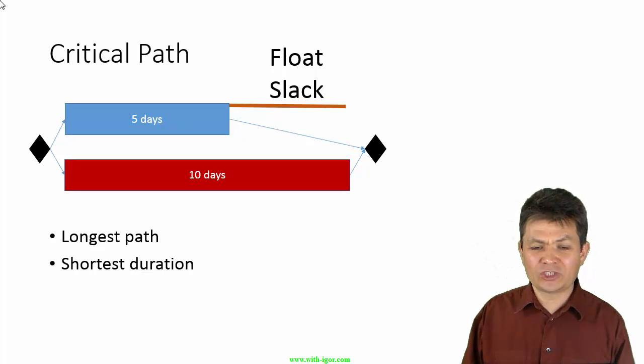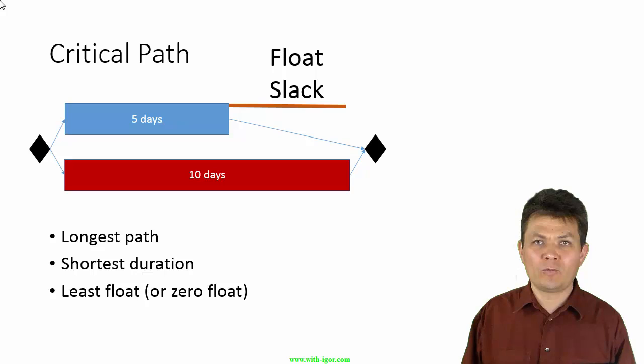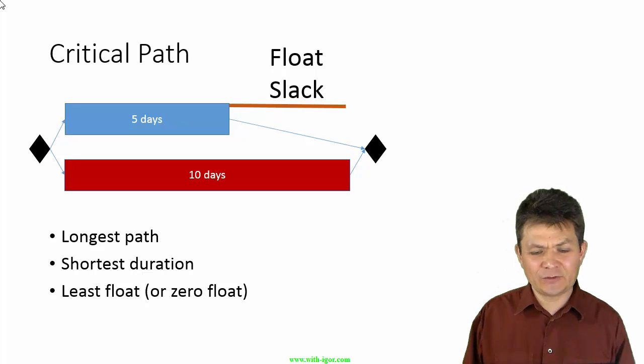And there is no slack on the 10-day task. So, the critical path is the longest path, the shortest duration of the project, and it is also the path with the zero float or smallest float or slack, least float or zero float.